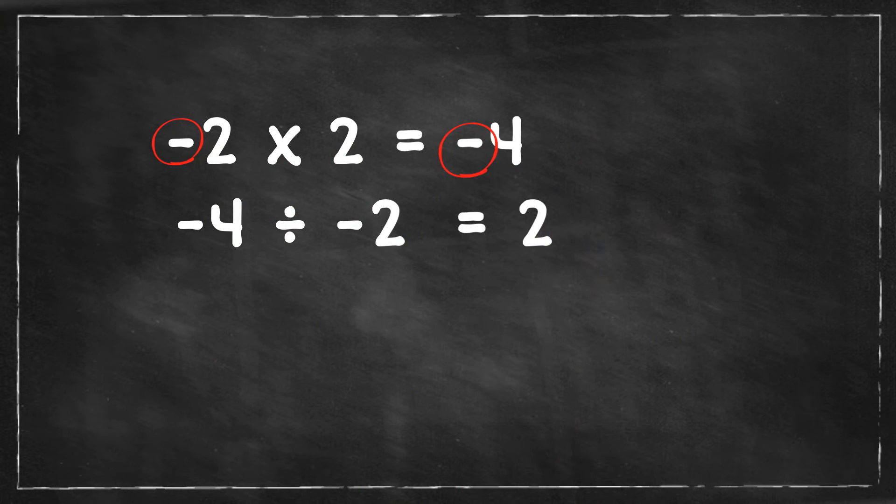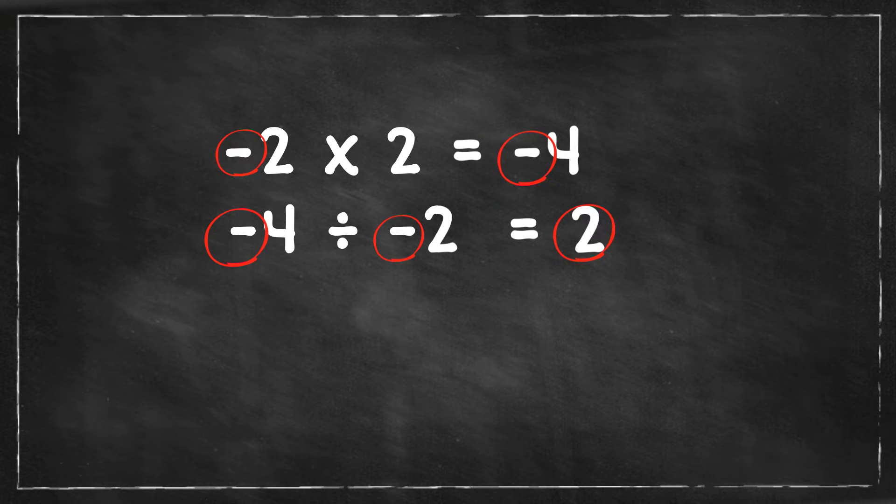Negative 4 divided by negative 2 is 2. Is it positive or negative? You have an even number of negative numbers, 2, so the answer is 2.